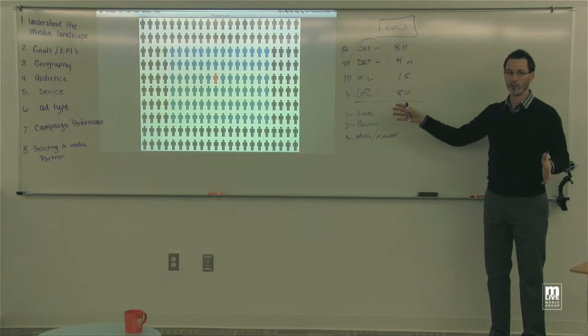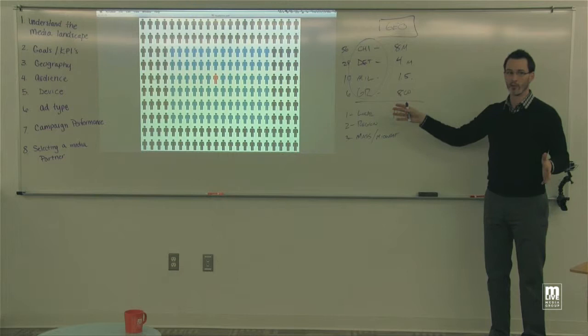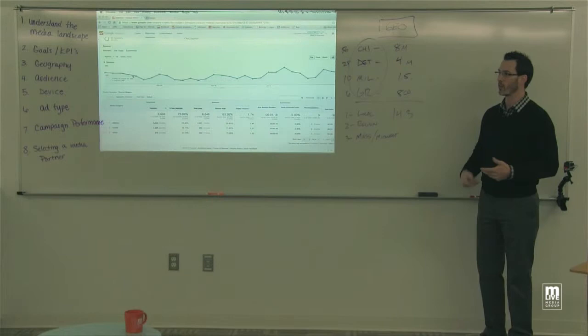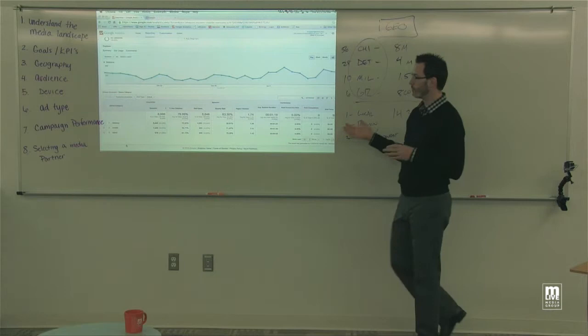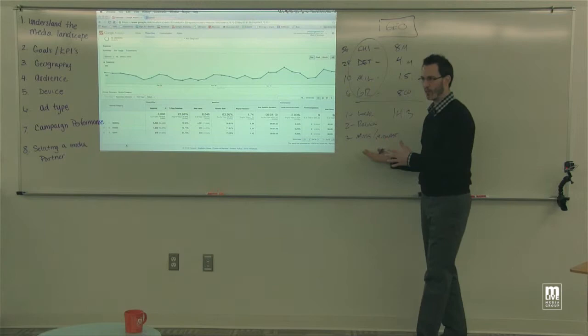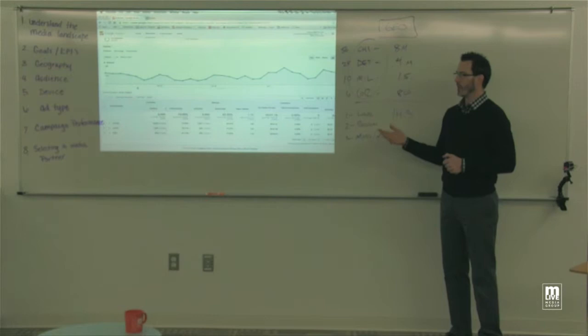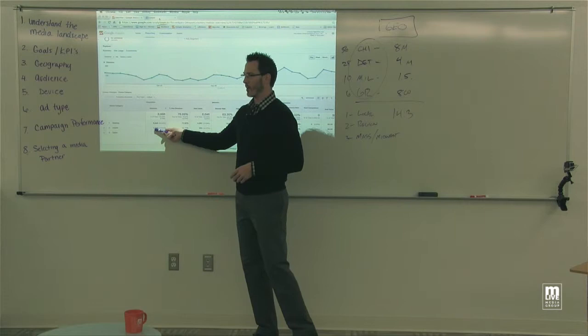Now that we know where those people are and who they are, we know they're using multiple devices — laptops, desktops, iPads, iPhones, and everything else. How do we reach them across multiple devices? In analytics, it will tell you how traffic is already coming to your website. In this example, desktop is 74%, mobile 14%, tablet 11%. Perhaps you should mirror that in your campaign. But if you don't have a mobile site and have a lot of mobile traffic, you might want to consider building one.